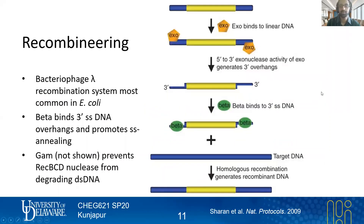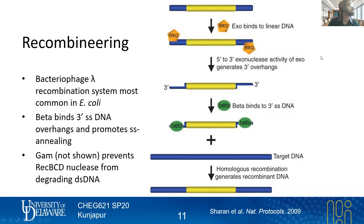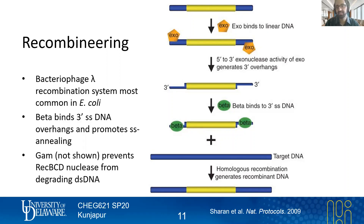We'll talk about recombineering with the bacteriophage lambda system, because it is one of the most well understood and frequently employed systems — under one name or another — in model organisms. As you think about this system or any of the other material from this unit, try not to memorize all the mechanisms at play, but rather compare and contrast and understand how this approach is different from using a nuclease.